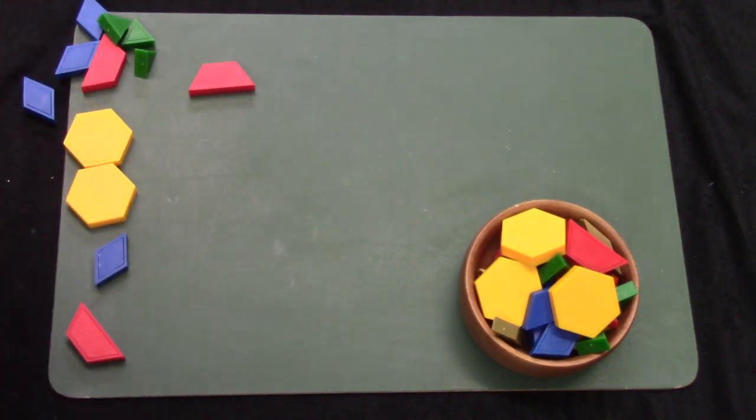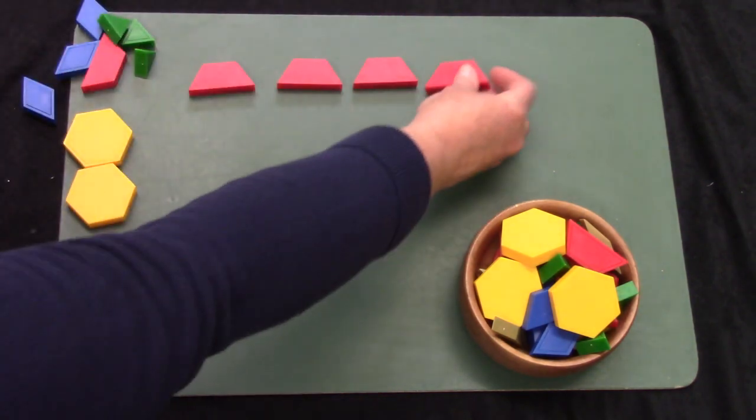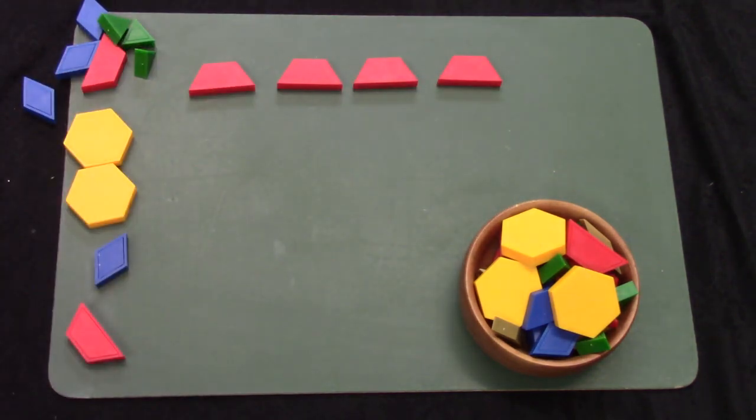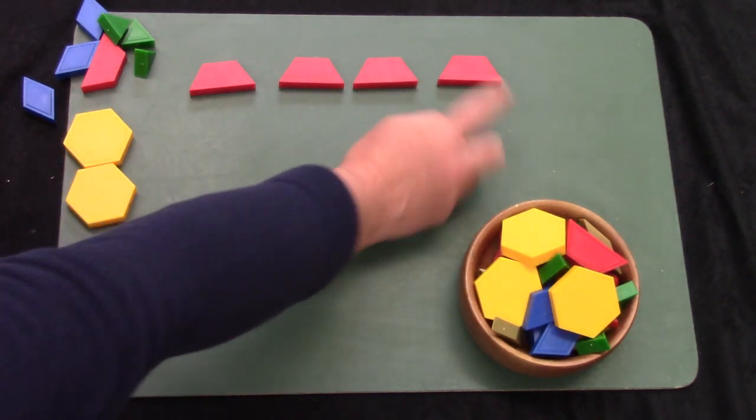We've made patterns with pattern blocks before. This type of pattern would be called an A-A-A pattern. It just has a trapezoid, trapezoid, trapezoid, trapezoid.